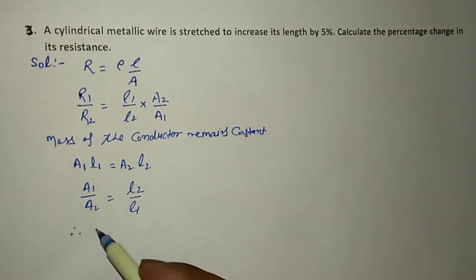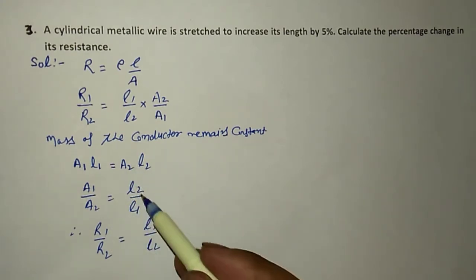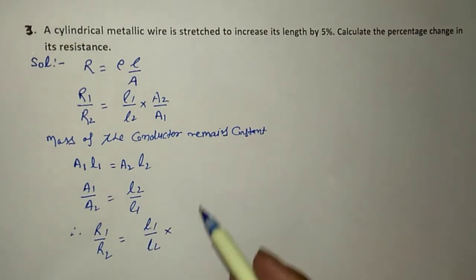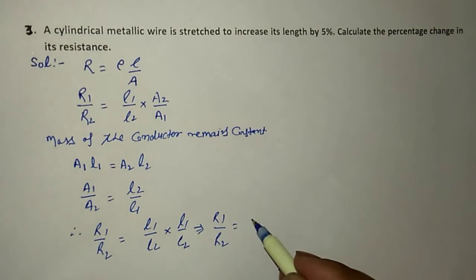Therefore, R1/R2 = (L1/L2) multiplied by (A2/A1). Here, A2/A1 = L1/L2, which implies R1/R2 = (L1/L2)².